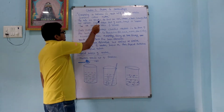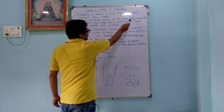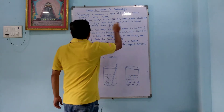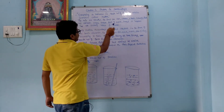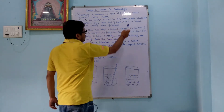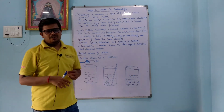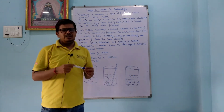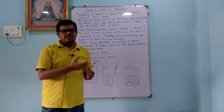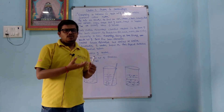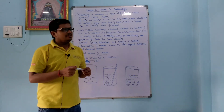The air we breathe, the food we eat, stone, cloud, plants, animals, even a small drop of water — all are examples of matter. You can give so many examples of matter. It is not necessary to read from a particular book; you can write any number of examples.